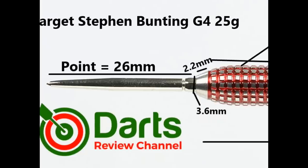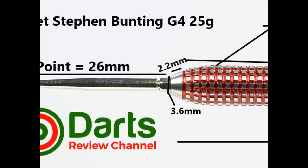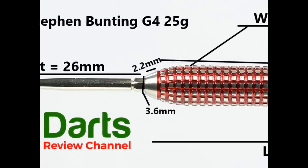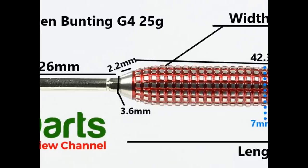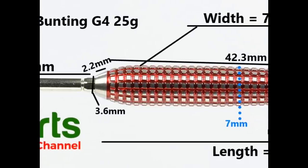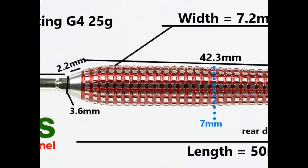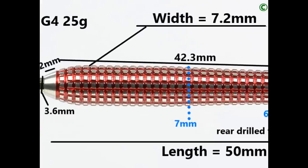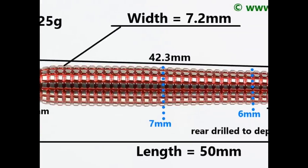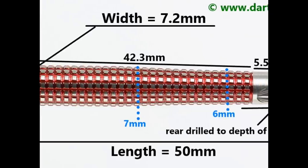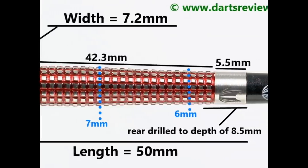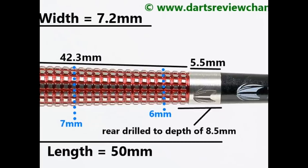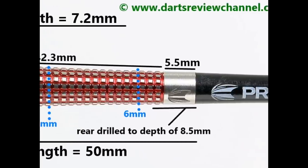It's fitted with the smooth silver 26 millimeter Swiss points. There's a small smooth section at the front of 2.2 millimeters, then the bulk of the barrel is made of this lateral and radial fine milled cut, like a waffle pattern, that's 42.3 millimeters. On the end you've got a smooth section of 5.5 millimeters. Length is 50 millimeters, width is 7.2 millimeters.